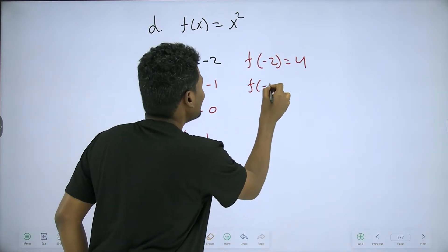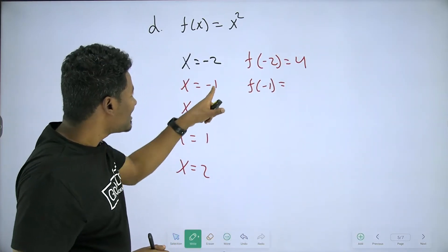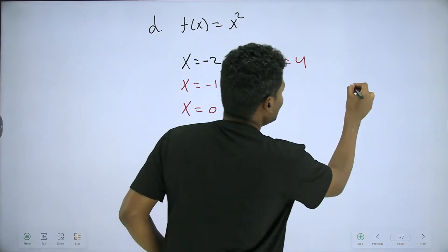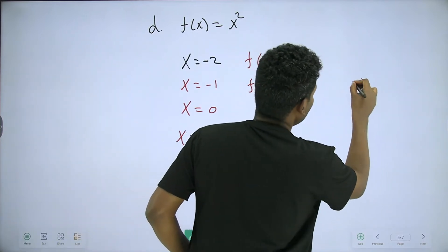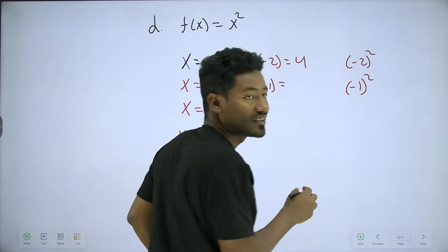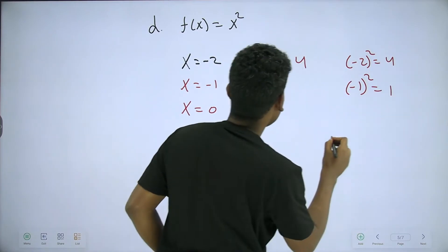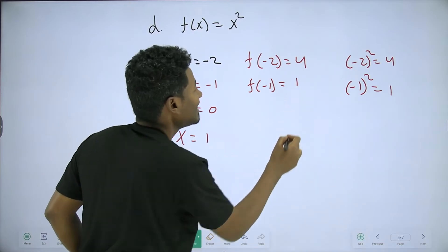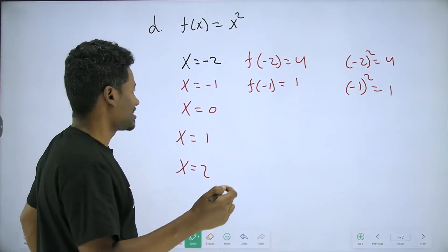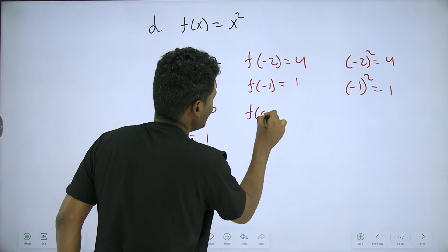f of negative one. Negative one squared equals positive one. f of zero — zero squared equals zero.